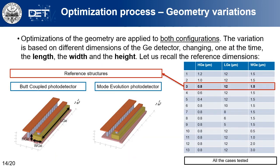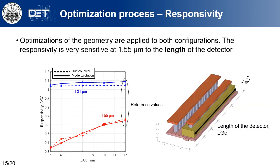After the analysis of the reference configuration, variations to the geometry of the germanium detector region were introduced. Specifically, we modified the germanium detector length, width, and height, for both the back coupling and mode evolution cases. The germanium detector region in the reference case is 12 micrometers long, 1.5 micrometers wide, and 0.8 micrometers in height. Among all experiments performed, only the variation of height and length of the germanium detector region are relevant.